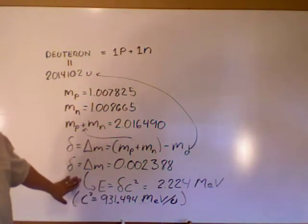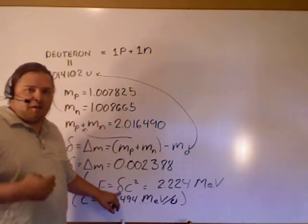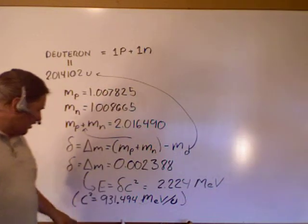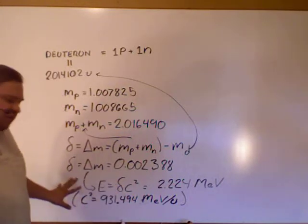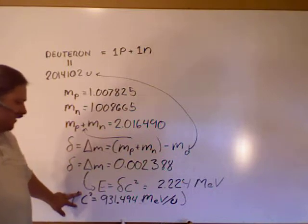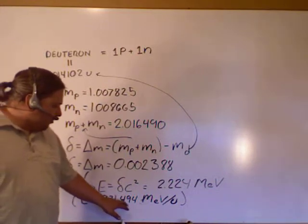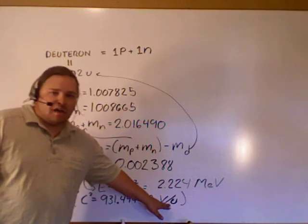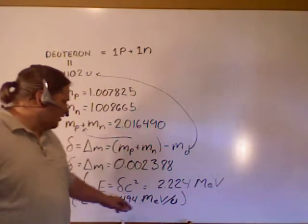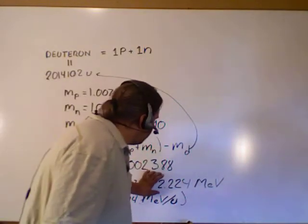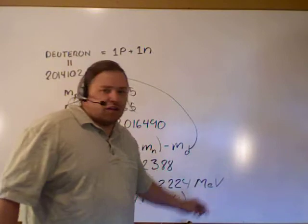So using this E equals MC squared idea, that energy is equal to M, mass, in this case mass defect, the amount of matter that is missing, times C squared. And I've converted C squared in here to mega electron volts. So C squared, which is the speed of light, in mega electron volts per atomic mass unit, is 931.494 mega electron volts per atomic mass unit. So you might want to write that number down. I don't know how common that is on a test.